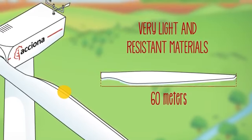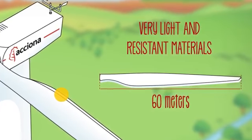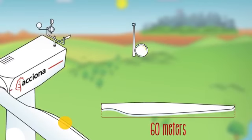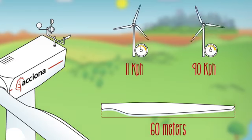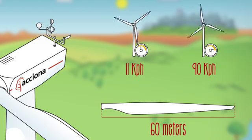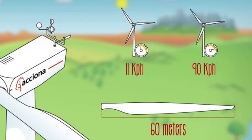This is why they can produce energy even with very light winds, starting from about 11 kilometers per hour. With very strong winds above 90 kilometers per hour, the blades are placed in the feathered position and the turbine stops spinning for safety reasons.